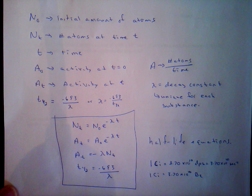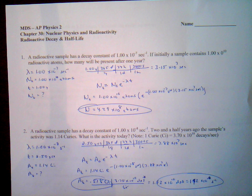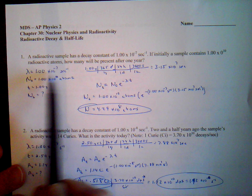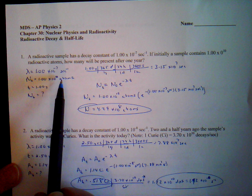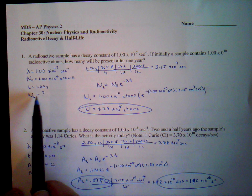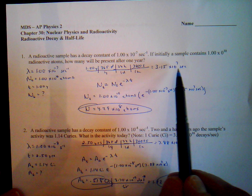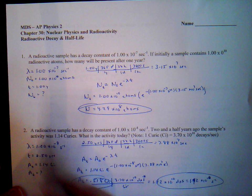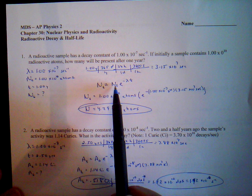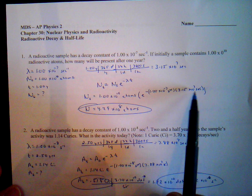Now we're going to go through the solutions. Problem 1: the decay constant is 1 times 10 to the minus 7 per second, the initial number of atoms is 1 times 10 to the 10th, and time is 1 year, which converts to 3.15 times 10 to the 7 seconds. Using the decay equation with these values, we get 4.29 times 10 to the 8 atoms remaining.